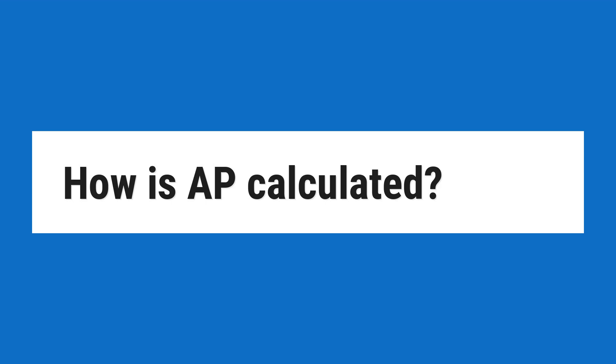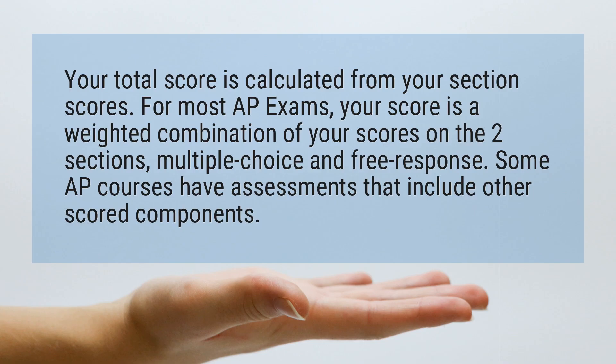How is AP calculated? Your total score is calculated from your section scores. For most AP exams, your score is a weighted combination of your scores on the two sections: multiple choice and free response. Some AP courses have assessments that include other scored components.